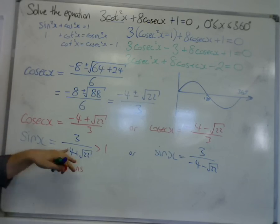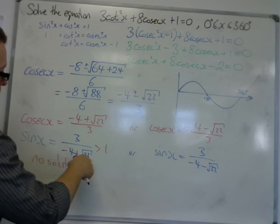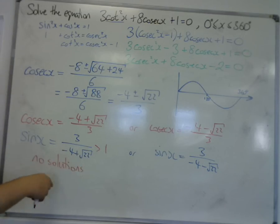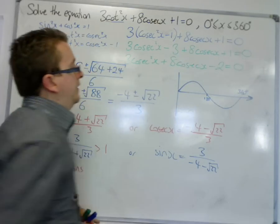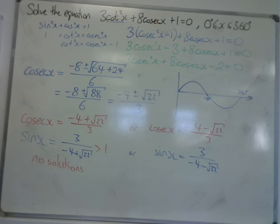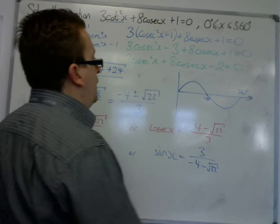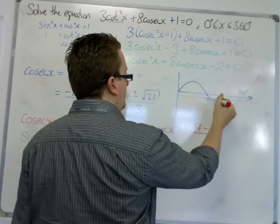Plugging that into a calculator, you should get something like 4 point something, which means 4 point something is up here and it doesn't cross the sine curve. This however is -0.345, so we will be getting two solutions from this.